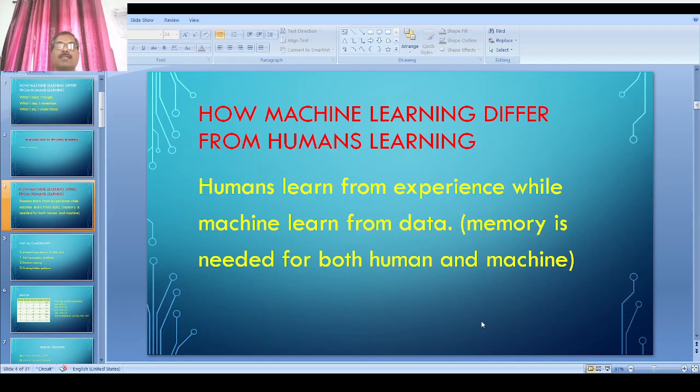To store huge amounts of data, we need memory chips. Learning is directly proportional to the amount of data supplied to the machine. Machine learning learns from data, and the volume of data is important. If we provide more data, machines learn better.